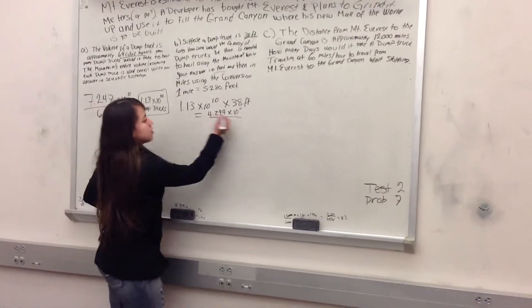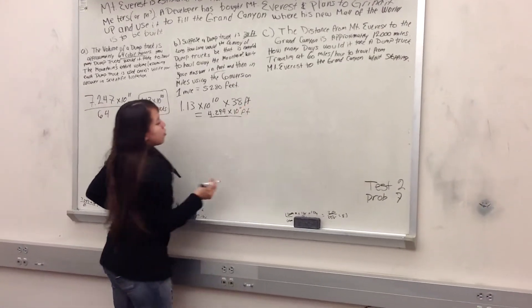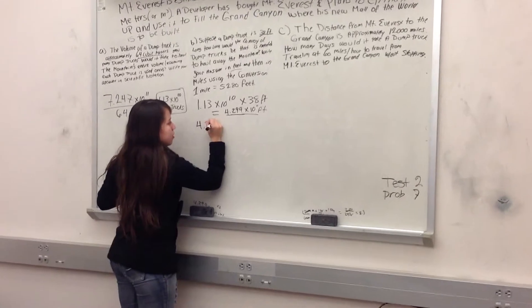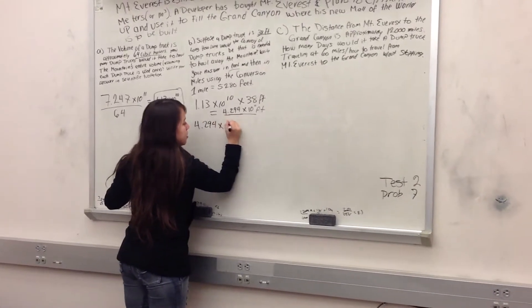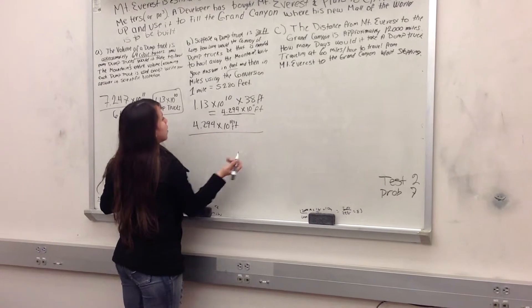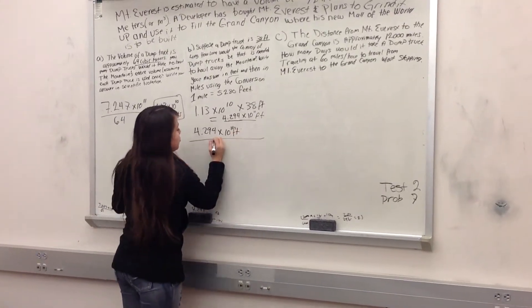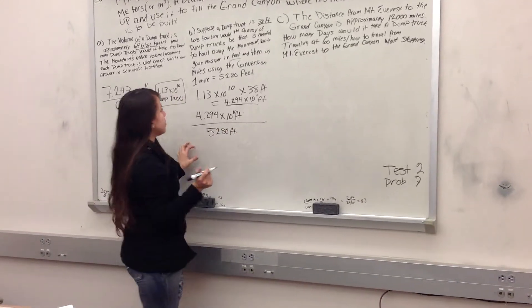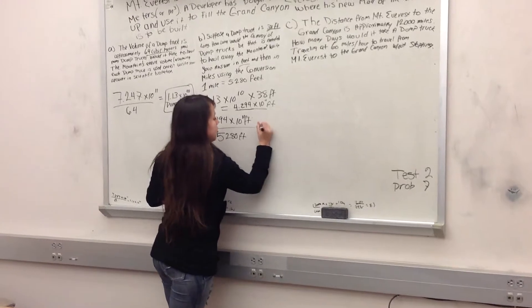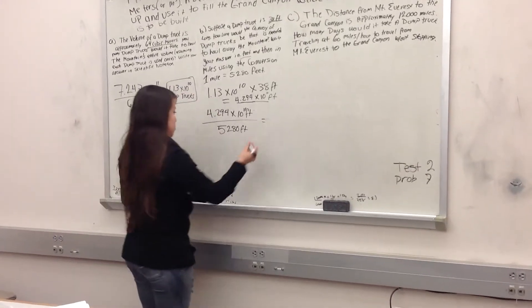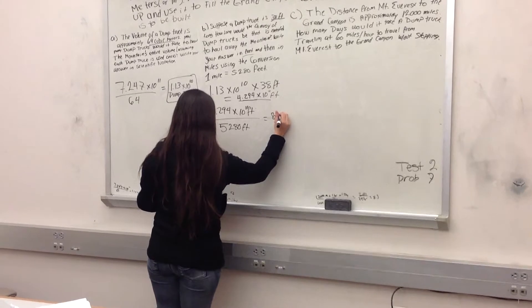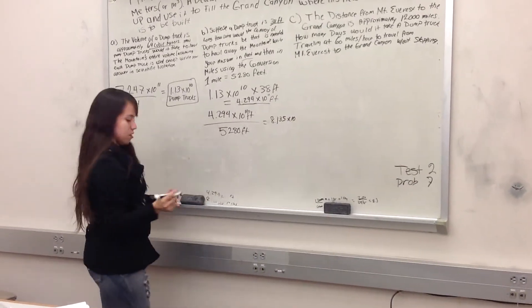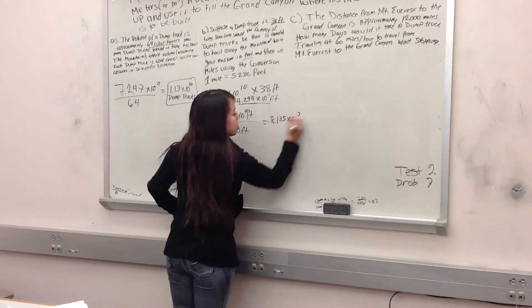And then if we convert this to miles, it would be 4.294 times 10 to the 11 feet divided by 5,280 feet, which equals a mile. And that equals 8.135 times 10 to the 7th miles.